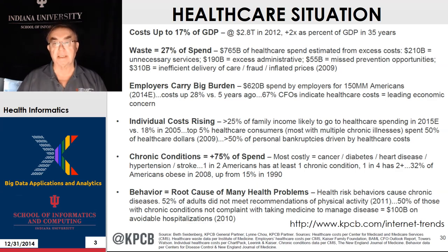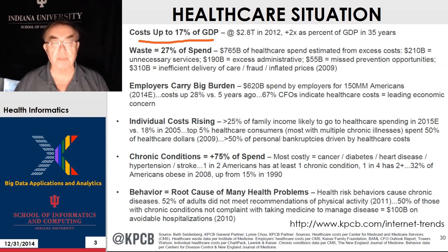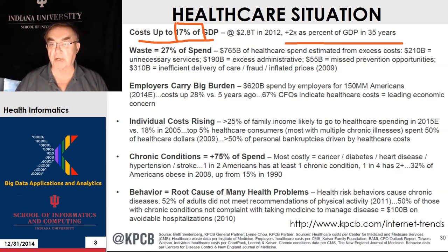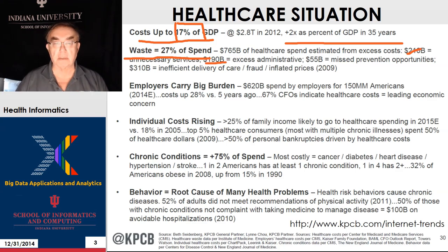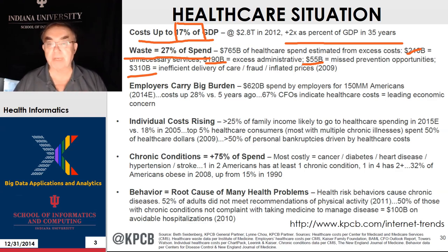Here is some overall status of healthcare. A very high fraction of gross domestic product is devoted to healthcare — 17%, or $2.8 trillion — and it has increased by a factor of two as a percentage of GDP in 35 years. It is thought that 27% of that money is wasted: unnecessary services, lots of bureaucracy, missed opportunity for prevention, and the largest amount is inefficient delivery. Interestingly, fraud doesn't appear on this list.